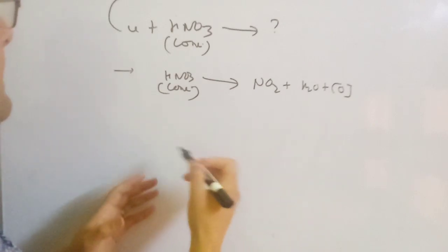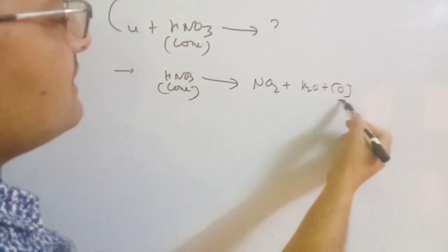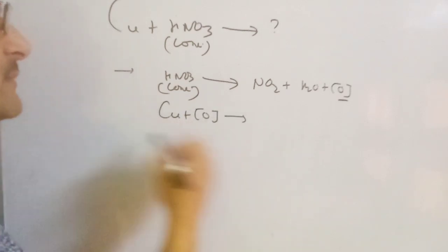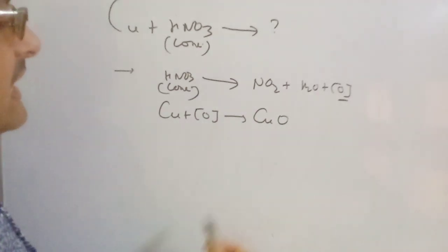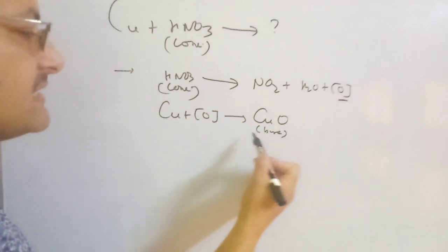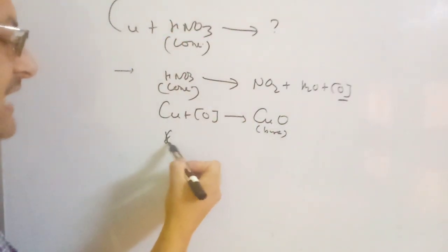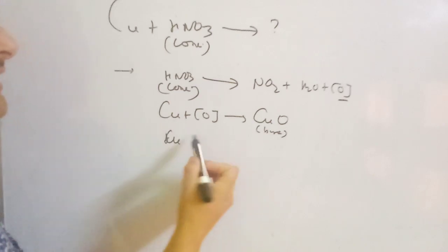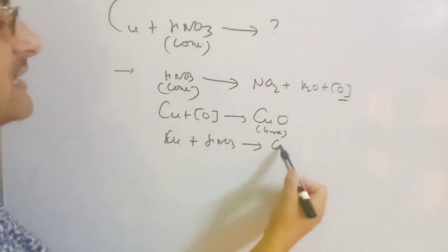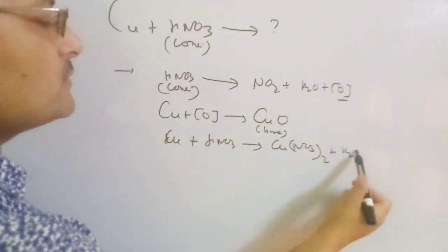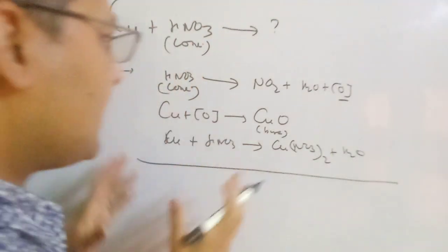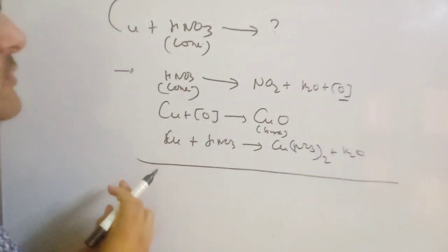This nascent oxygen reacts with copper — nascent oxygen is very reactive and reacts with metal — giving CuO. CuO is a basic oxide; this cupric oxide is basic, and basic oxide reacts with HNO₃. HNO₃ acts as both an oxidizing agent (releasing nascent oxygen) and as an acid. So copper reacts with HNO₃ giving copper nitrate plus salt and water. These are the partial equations.